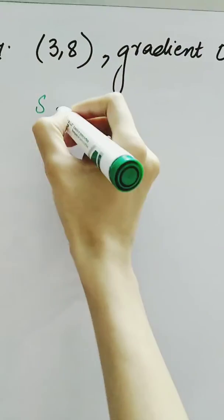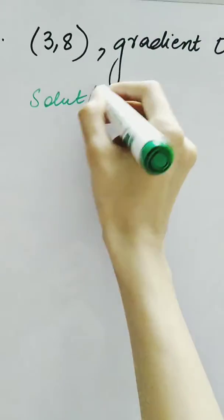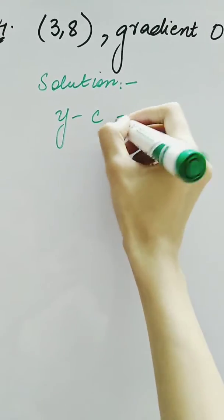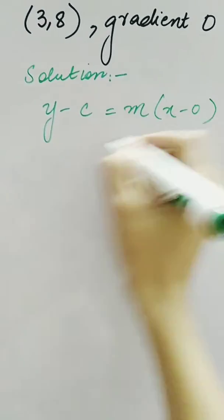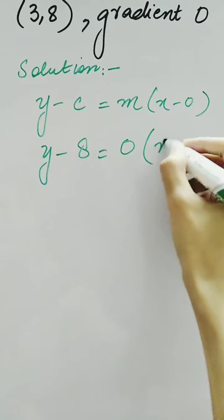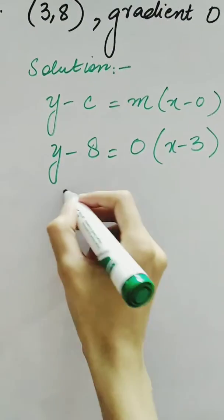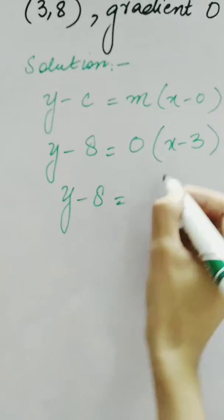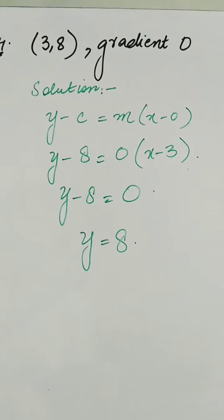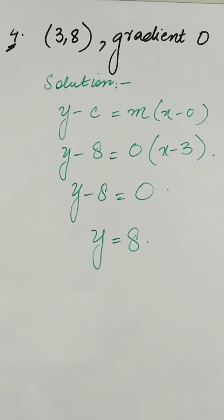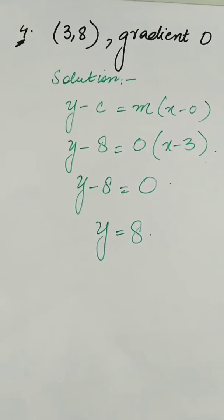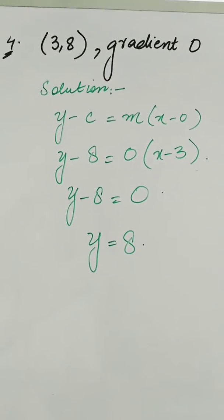We have another question in which the coordinates are given as (3, 8) and gradient is 0. Putting these values into the equation of the line: y - 8 = 0(x - 3). This 0 multiplied with the bracket becomes 0, so y = 8. Whenever you have gradient 0, there is no x term — the line is parallel to the x-axis.